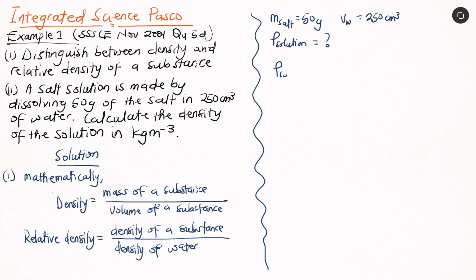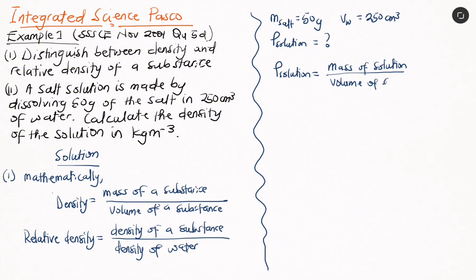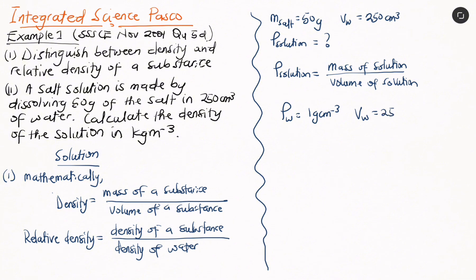The density of the solution, from the definition given earlier, will be equal to the mass of the solution divided by the volume of the solution — which in this case is a salt solution. We only have the mass of salt and the volume of water, not the mass or volume of the solution directly. The density of water is a constant: 1 gram per cm³. Given the volume of water is 250 cm³, we can find the mass of water easily.